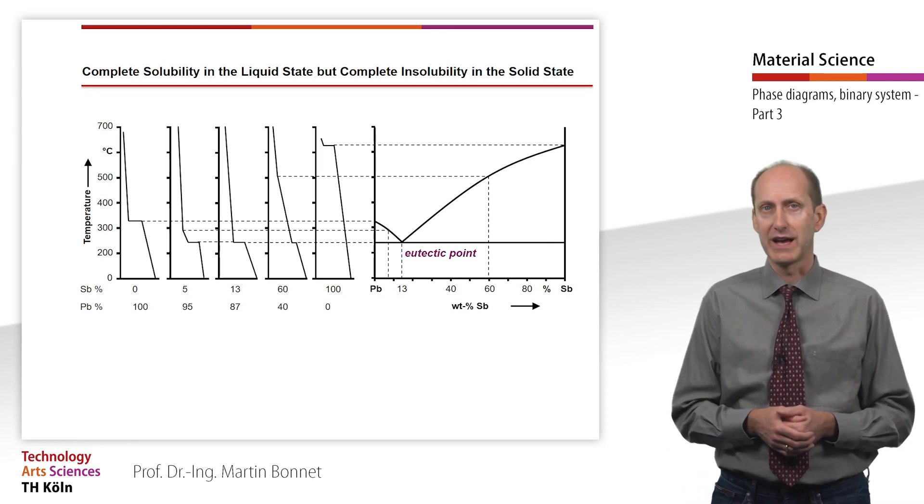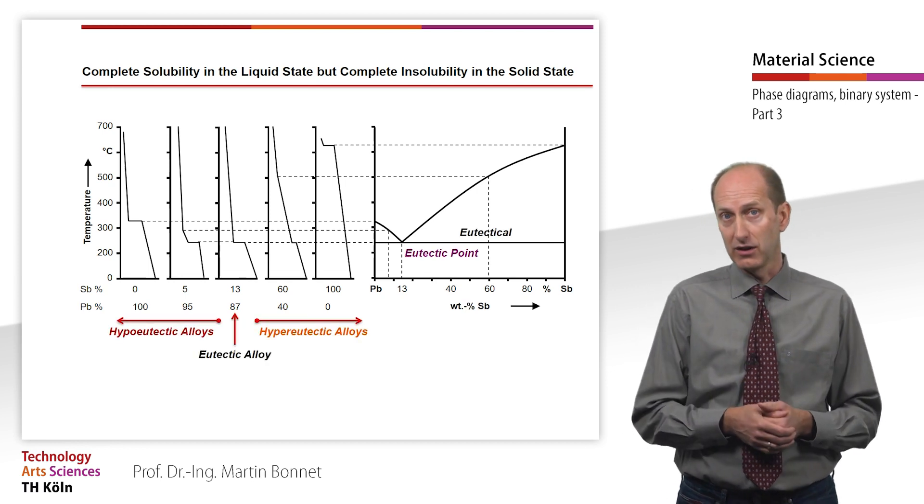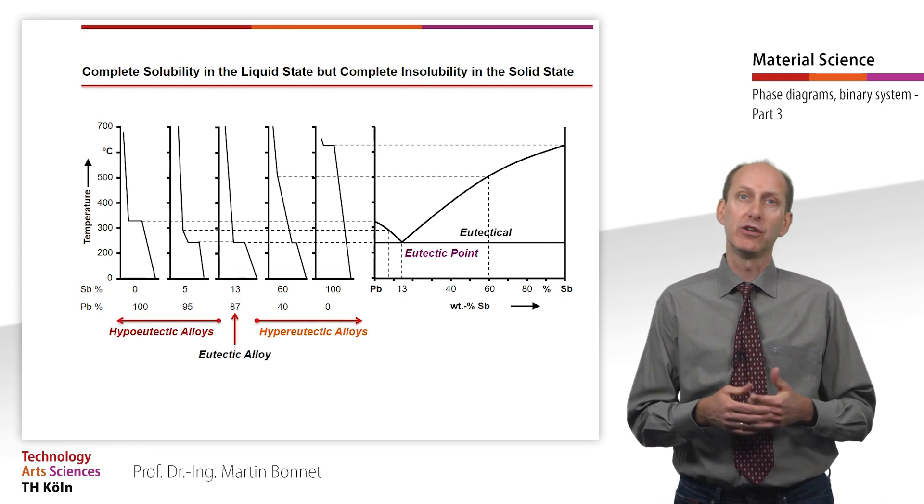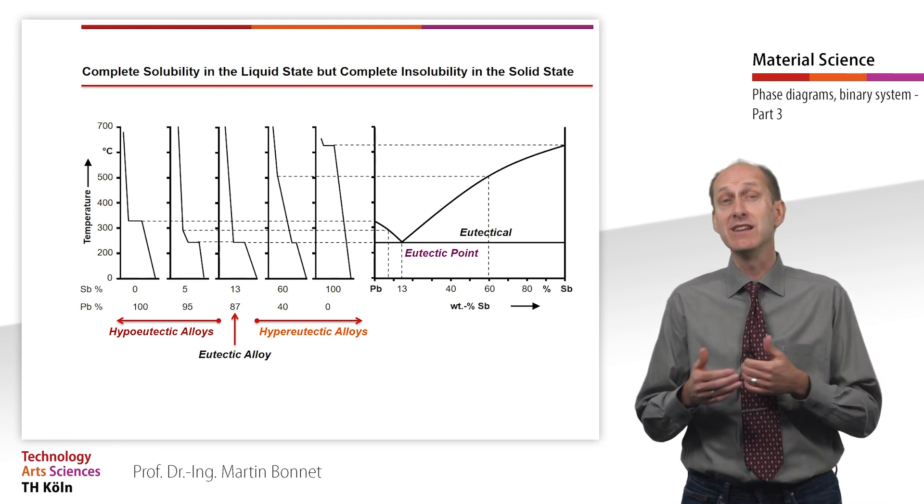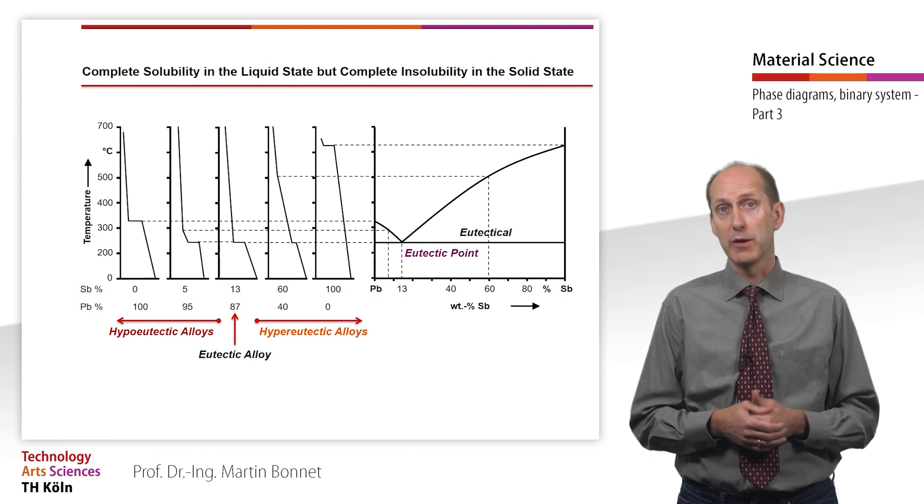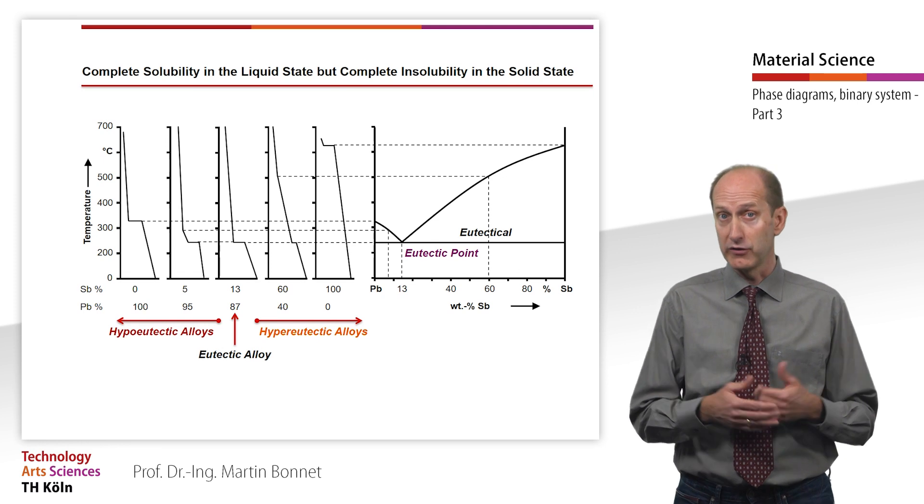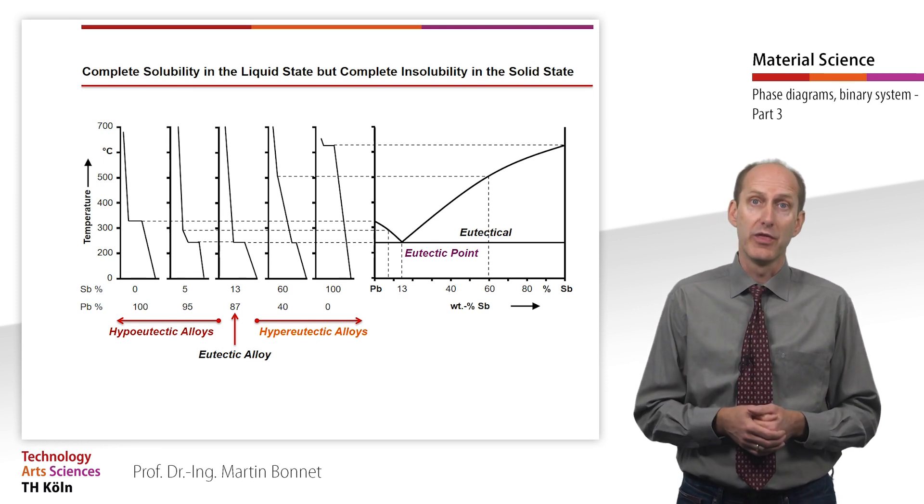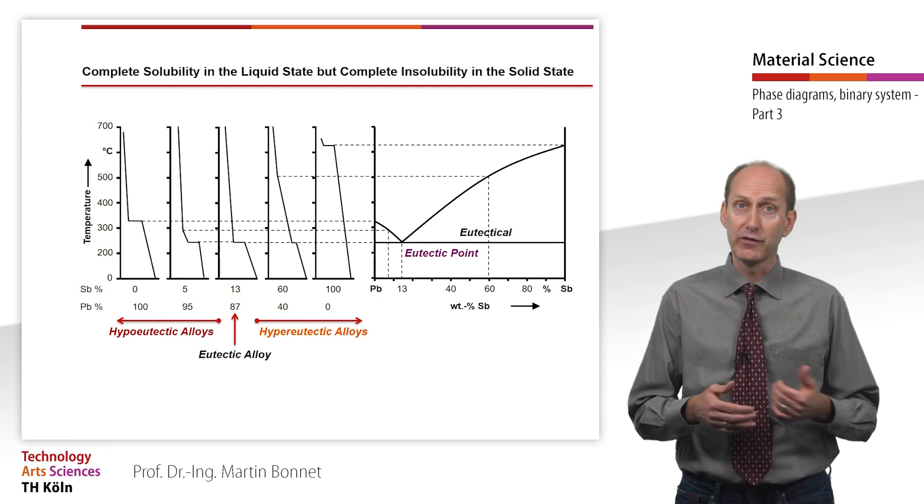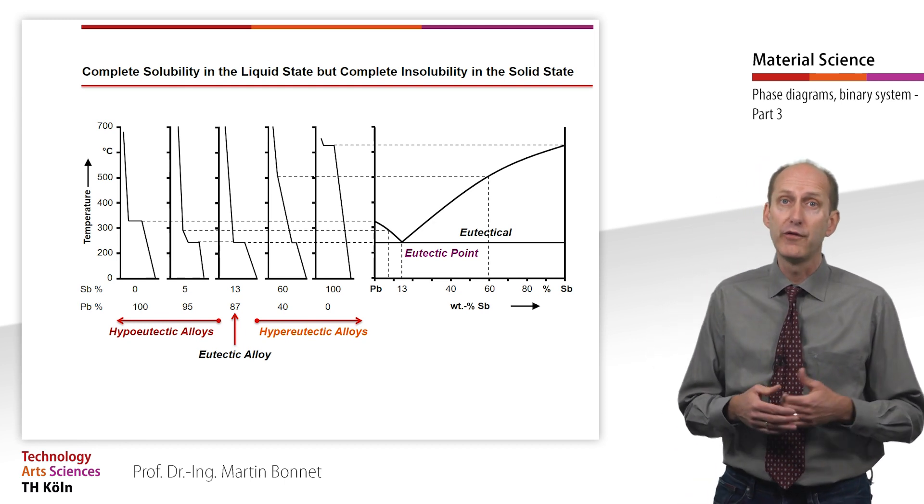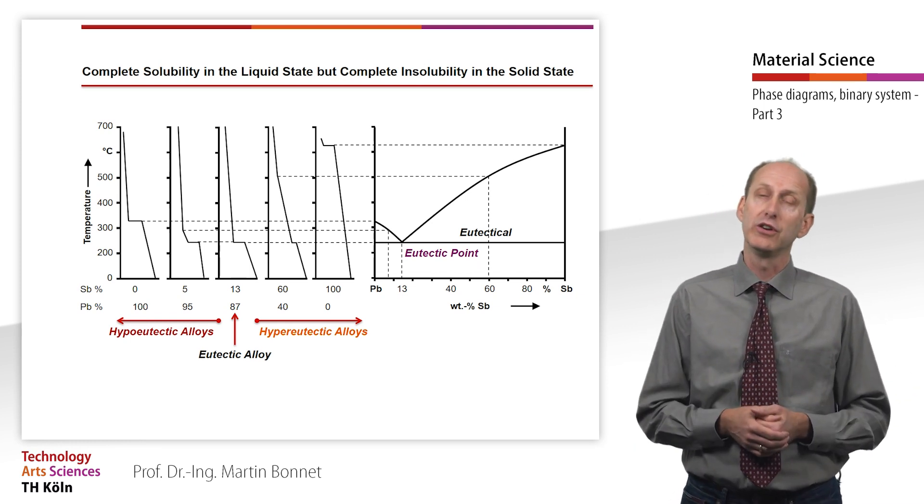For all hypo-eutectic alloys and hyper-eutectic alloys, the thermal analysis shows a breakpoint and an arrest point. The breakpoint indicates the fall below the liquidus, whereas the arrest point where the melt has reached the eutectic concentration and solidifies as eutectic indicates the fall below the solidus, which in this case is called eutectical.